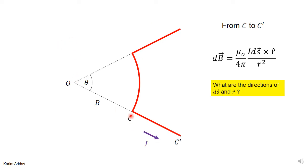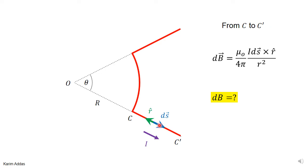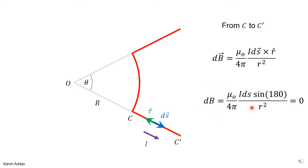For the second part of the wire, from the arc end back to infinity, it's much the same. ds points radially outward in the direction of the current, and r-hat points from the element toward point O, so the angle between them is 180°. Since sin(180°) = 0, this part of the wire also contributes nothing to the magnetic field at the origin.